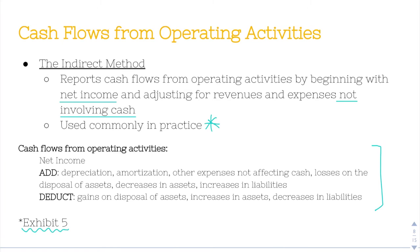The process is: you start with net income. Then you add depreciation, amortization, and other expenses not affecting cash — what are called non-cash expenses. Depreciation is the allocation of an asset's useful life over time, but it's not directly involving cash. We just allocate it to an expense over time, so it's not an actual cash expense and it's not decreasing our cash position. So we add it back to net income. Same thing with amortization and any other non-cash expenses.